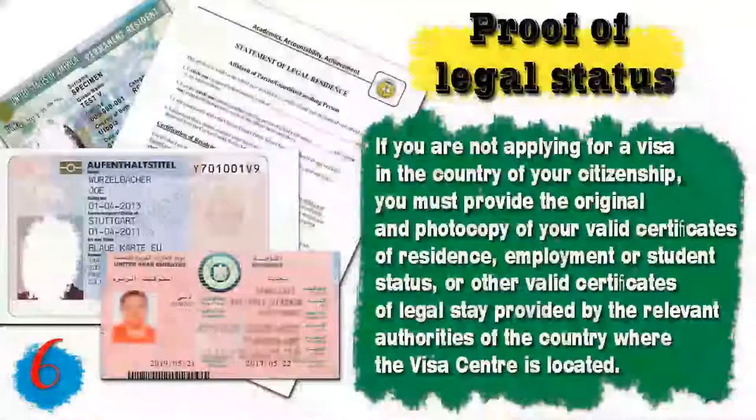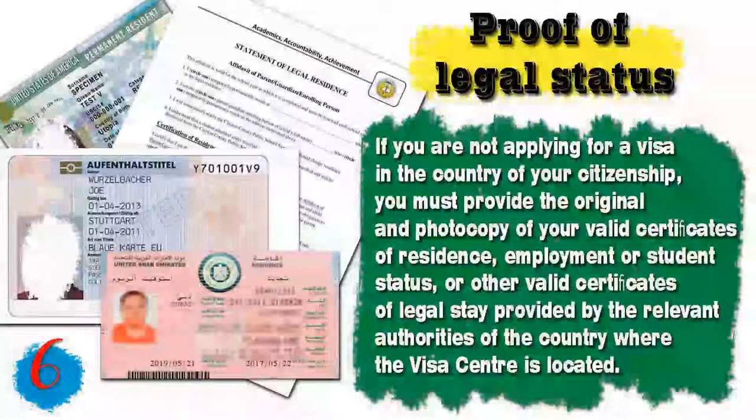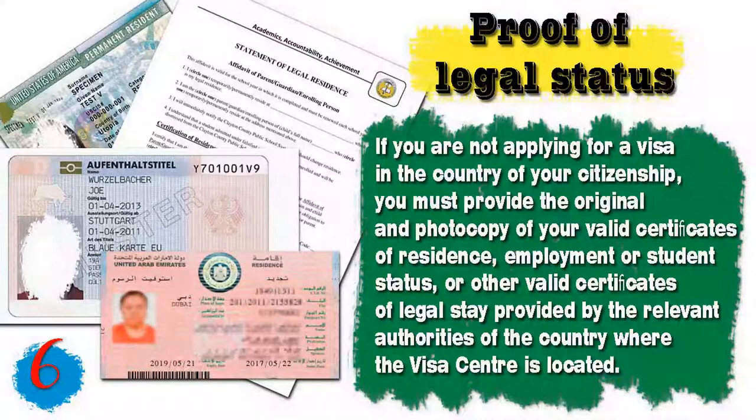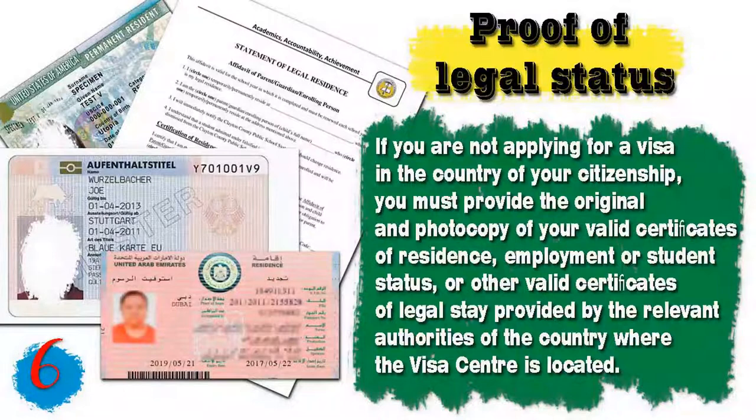Number six, for foreigners applying outside their country of citizenship, you will need a legal residence permit. You must provide the original and photocopy of your valid certificate of residence, employment, or student status, or other valid certificates of legal stay provided by the relevant authorities of the country where the visa center is located.